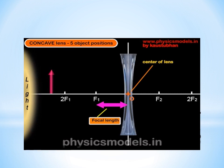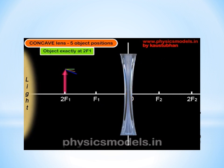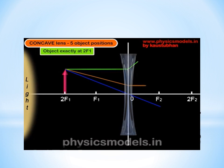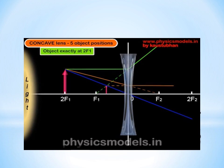Next, we move the object closer to the lens and place it at 2F1. We draw the same three rays as before. The green ray is parallel to the principal axis, refracts, diverges, and its projection passes through F1. The orange ray aimed at F2 travels parallel to the principal axis. The blue ray goes through O without any change. The image here is again virtual, erect, diminished, and its position is between O and F1. The position and size of the image seem consistent for different positions of the object.